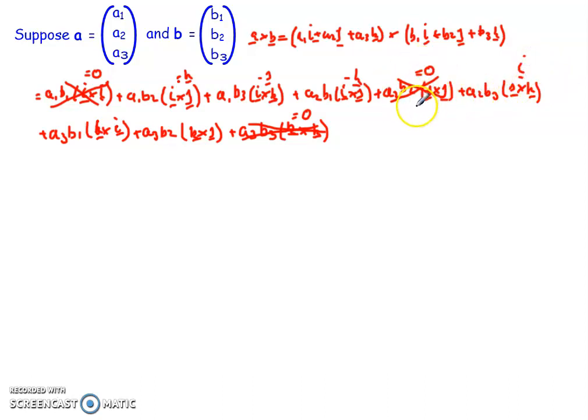Remember, this is zero, so we can ignore that. We've got the a3 b1, the k cross i gives me the equivalent j. And the last one, a3 b2, k cross j gives me the equivalent of negative i.